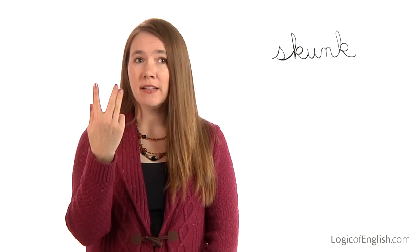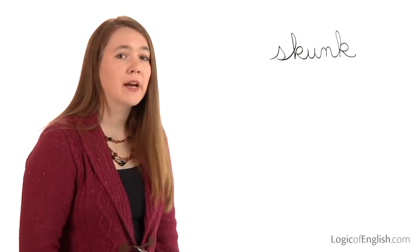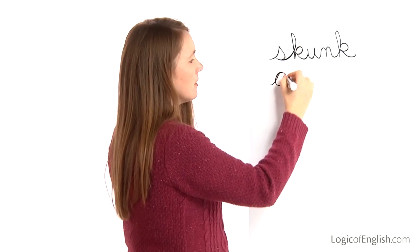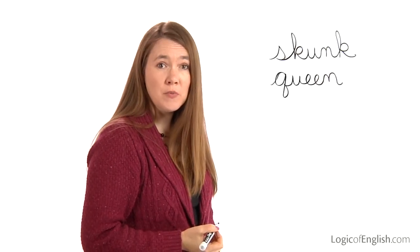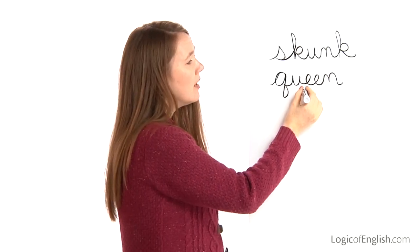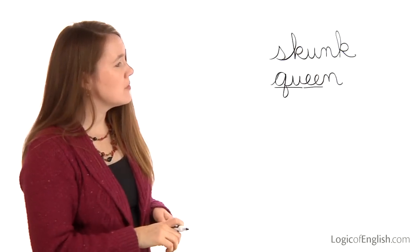The next word is queen. She will be the queen in the play. Queen. Let's sound out queen together. Qu, e — this is an e-double-e — n. Go ahead and write queen. Qu, e, n. And how will we mark queen? We'll underline the e-double-e and the qu. So we have two multi-letter phonograms here: qu and e-double-e.